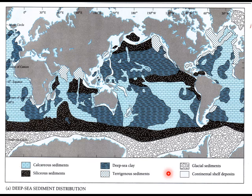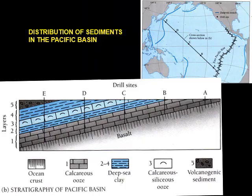The map shows that pterogenous and glacial deposits are found adjacent to continents and land masses, whereas calcareous and siliceous sediments and deep sea clay are found in the deeper part of the ocean floor.